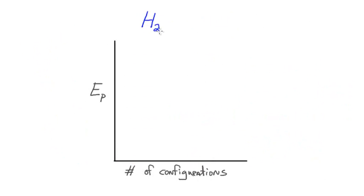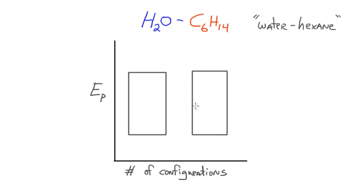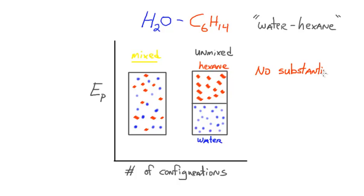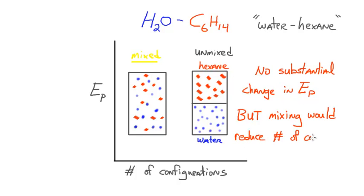Now let's take a look at water and hexane, which is essentially analogous to water and oil. We know that they do not mix. It turns out that the difference in potential energy between mixed and unmixed is fairly negligible, so configurational changes is the dominant factor. In this situation, the mixed state is of lower number of configurations than the unmixed state. Therefore, through random motion, the probability of the system being in an unmixed state versus mixed is much higher. Water and hexane do not mix due to the loss in configurations on moving from unmixed to mixed — mixing would reduce the number of configurations, so they do not mix.